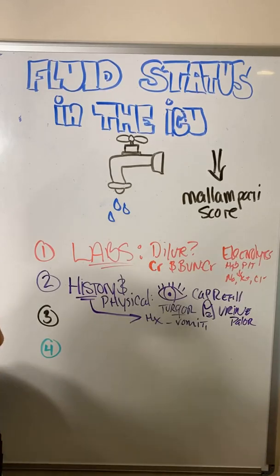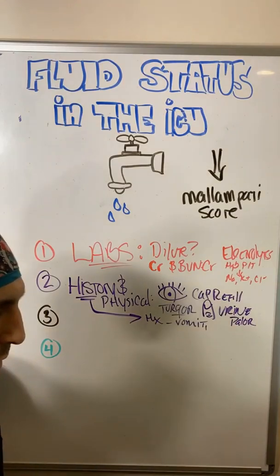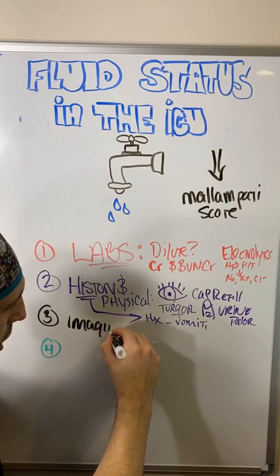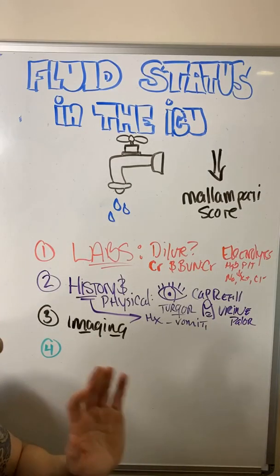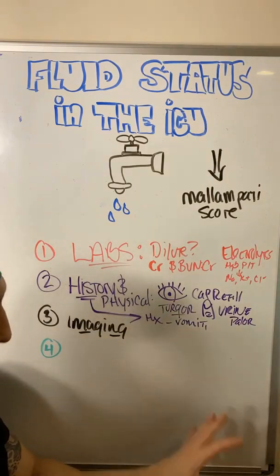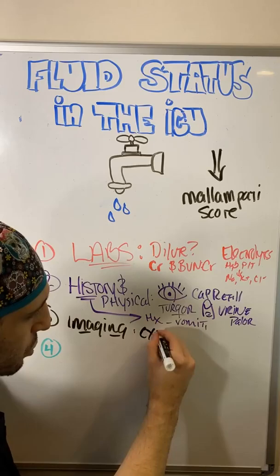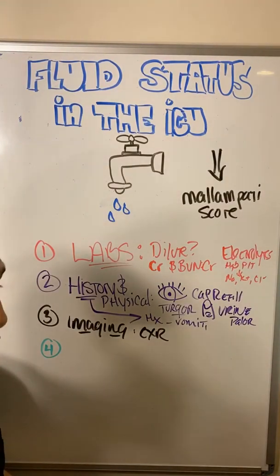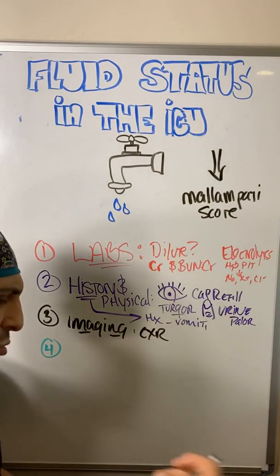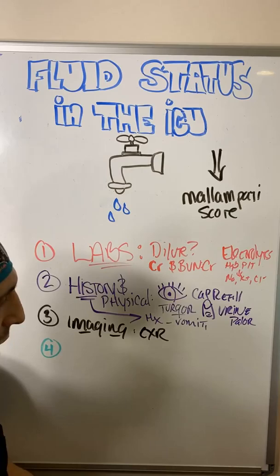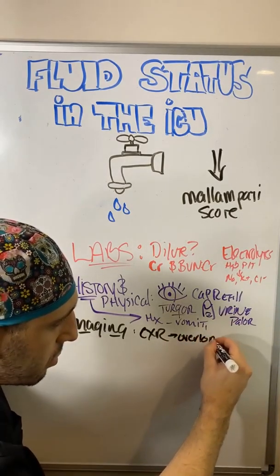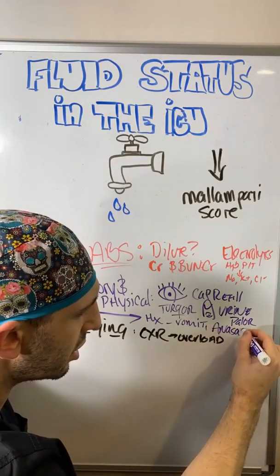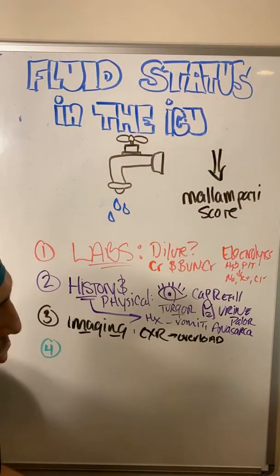History and physical exams are super important even though we learned them once upon a time. Next is imaging. Imaging can be super important and tell you a lot, but it can also lead you astray. With chest X-rays in the ICU: please don't get daily chest X-rays — the evidence is very clear you don't need them unless there's a change in respiratory status. When looking for volume status, do the lungs look overloaded? Also consider whether the patient looks anasarcic or swollen versus dry.